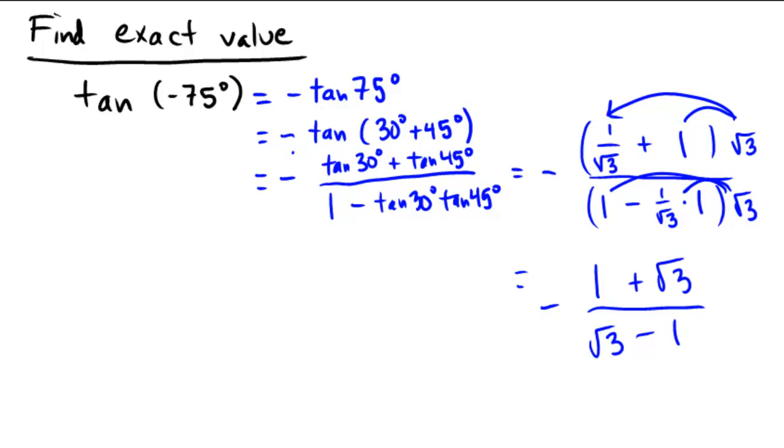We could do some extra simplification here if you felt like it. We could multiply by the conjugate, radical 3 plus 1, radical 3 plus 1. I didn't realize I was going to have so much simplification here, so I hope you're okay if I come over here.